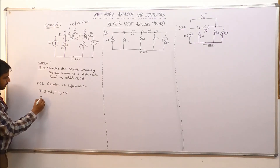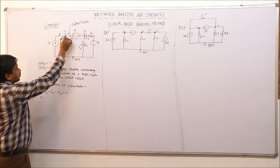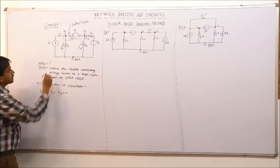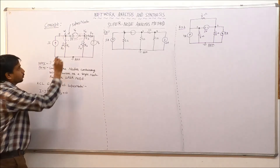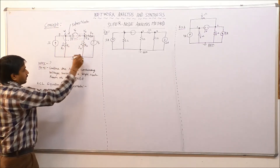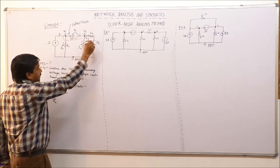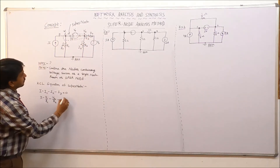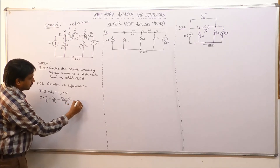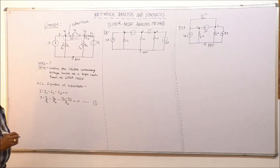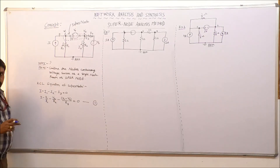The current source I is a constant value, so it stays as is. The other currents are expressed in terms of node voltages. I1 equals V1 divided by R1 (node voltage at node 1 over the resistance to the reference node). I2 equals V2 divided by R2 (node voltage at node 2 over R2). I3, the current in the branch with resistance R3 and voltage source Vb, equals V2 minus Vb divided by R3. This gives the first equation directly at the super node, reducing the need to write and combine two separate KCL equations.